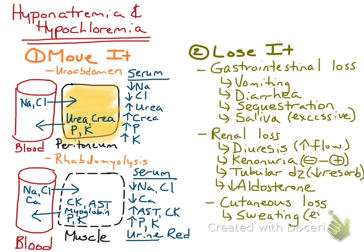For cutaneous loss, causes include excessive sweating and burns. In summary, hyponatremia and hypochloremia can result from sodium and chloride moving into the abdominal cavity with uroabdomen, moving into a dead space with rhabdomyolysis, or being lost via the gastrointestinal tract, the kidneys, or cutaneous routes.